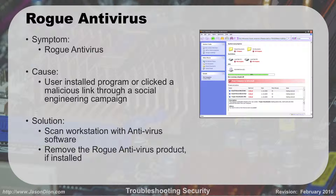Rogue antivirus is caused when a user installs a program or clicks a malicious link through a social engineering campaign. You get a browser pop-up that looks like a legitimate antivirus program saying your computer is infected — one example was called PC Clean 2K. It performs a fake scan, says you have all these errors, and tells you to click here to fix it. When you click, you actually install malware and they want you to pay money to fix it. Use real antivirus software and remove the rogue product.